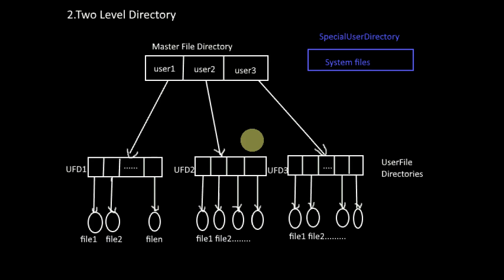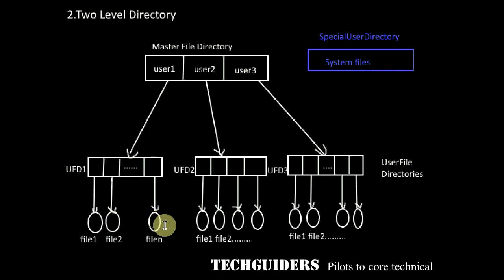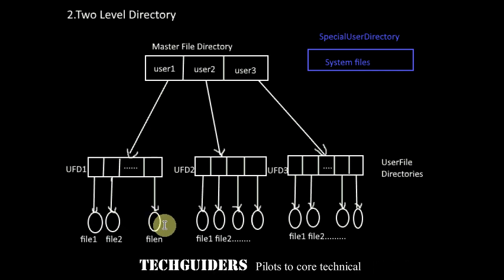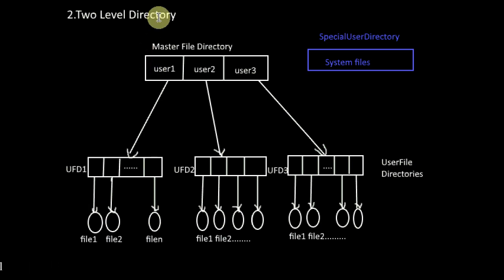In the two-level directory structure, even though each user has a separate directory, inside it is a flat file system where the files are not organized or structured. Thus, the two-level directory structure is extended to form the tree structure directory.